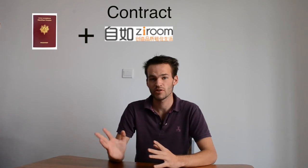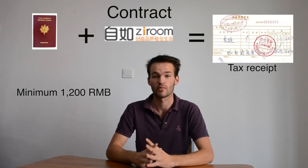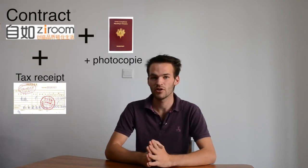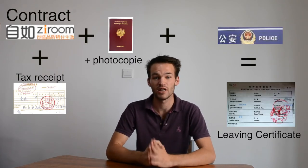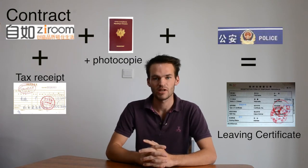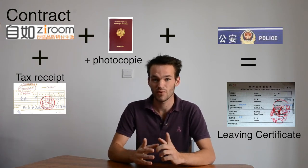But it's not finished. Since you live outside the campus, you need to pay a tax. To pay the tax, you need your passport and your contract. The tax depends on the size of your room — the cheapest is 1,200 RMB. When you pay the tax, you will receive a tax receipt.